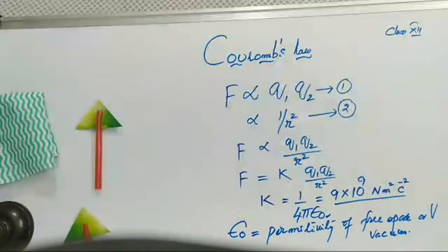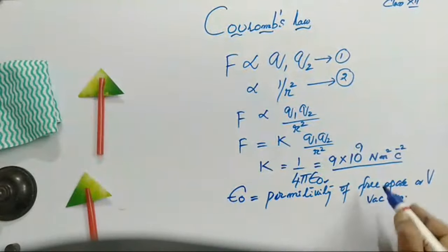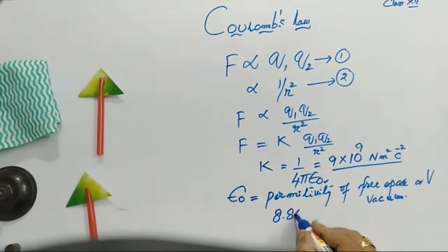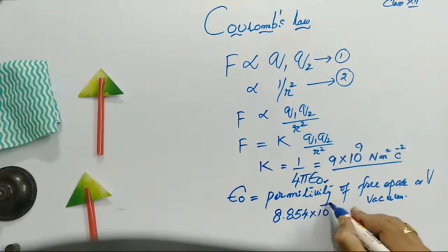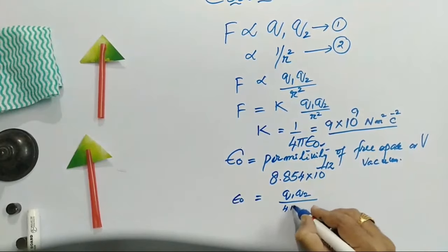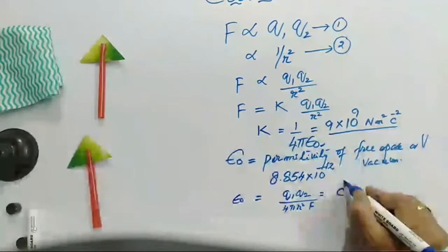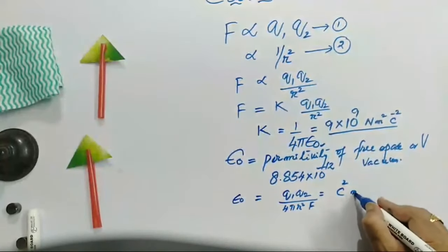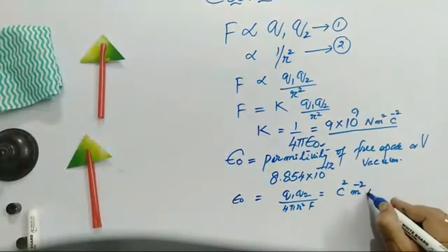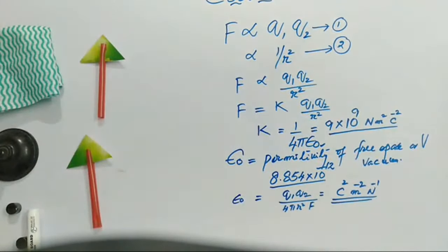It is the permittivity of free space or vacuum. This permittivity will vary from medium to medium. Epsilon for vacuum is epsilon naught, which is equal to 8.854 into 10 to the power of minus 12. It equals Q1 Q2 by 4 pi R square times force. This gives Coulomb squared in the numerator and meter minus 2 and Newton minus 1 in the denominator. This is the SI unit and value of epsilon naught.